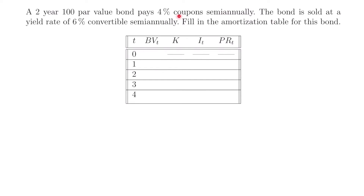Welcome back. Let's start with this example. We have that a two-year, $100 par value bond pays 4% coupon semi-annually. The bond is sold at a yield rate of 6% convertible semi-annually, and we want to fill in the amortization table for this bond.